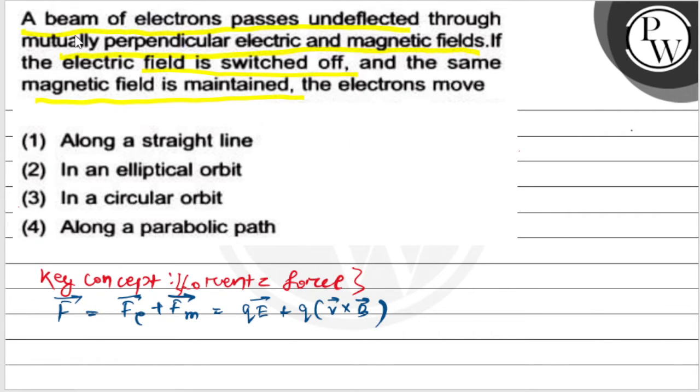So we have the question given: if a beam of electrons passes undeflected through mutually perpendicular electric and magnetic fields, let us consider this is our velocity vector which is in this direction, and this is the magnetic field and electric field moving perpendicular to each other.